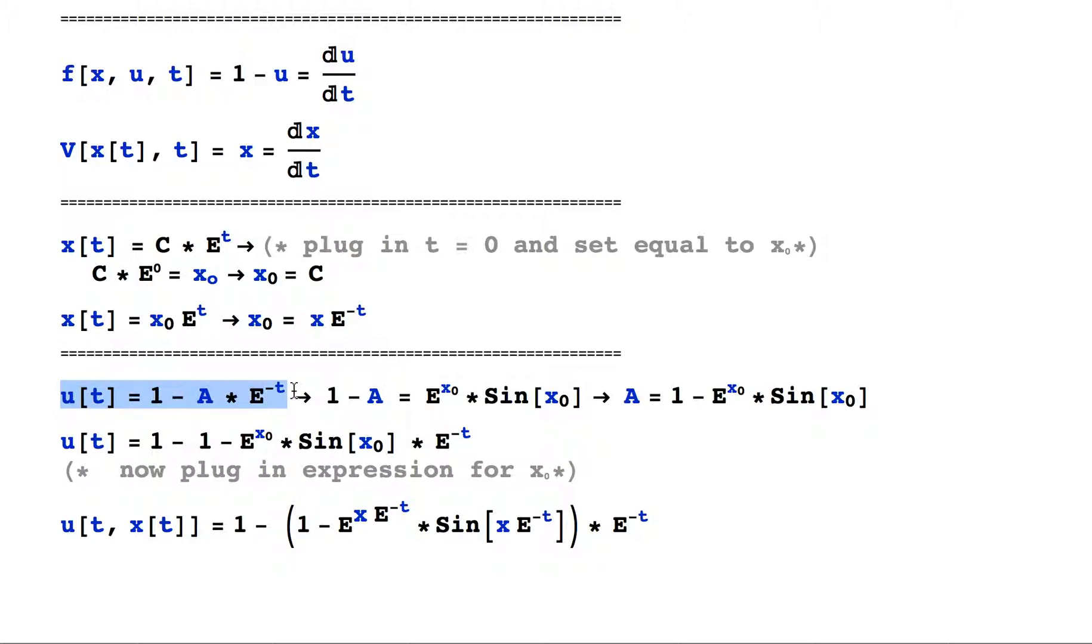And now what we do is we set time equal to zero. Notice here that u is explicitly a function of time. This constant A may be dependent on x, but since we're integrating an ordinary differential equation, this function is purely time dependent. So if we plug in time equals zero, then A may be some function of x_naught, but it's not going to be a function of x because we're at time equals zero.